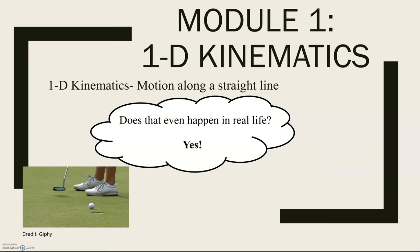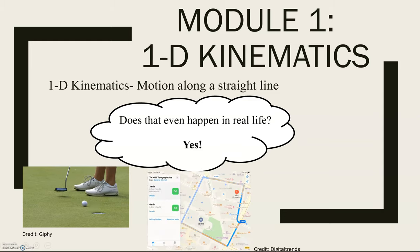Something that we see probably more frequently in our everyday lives is when we're walking or we're driving and we're using a map app or a GPS to get an estimate on the amount of time it's going to take. We have one dimensional kinematics to thank for the ability to be able to estimate that time.